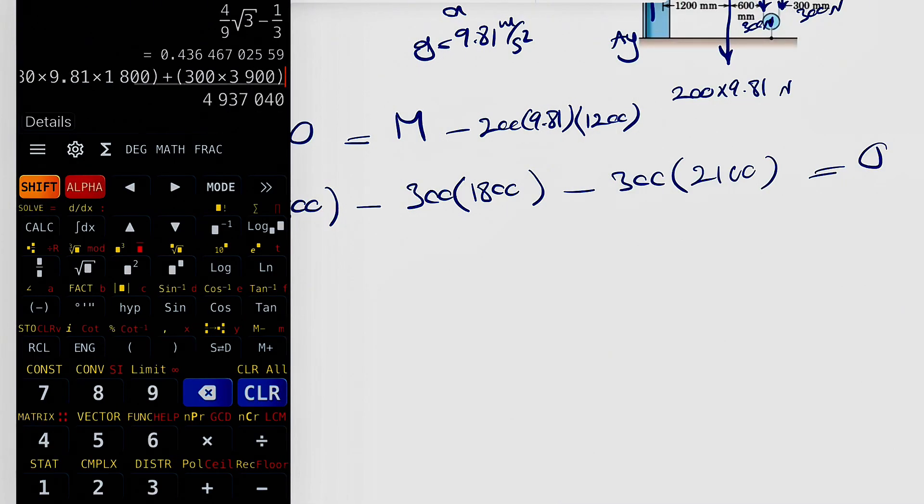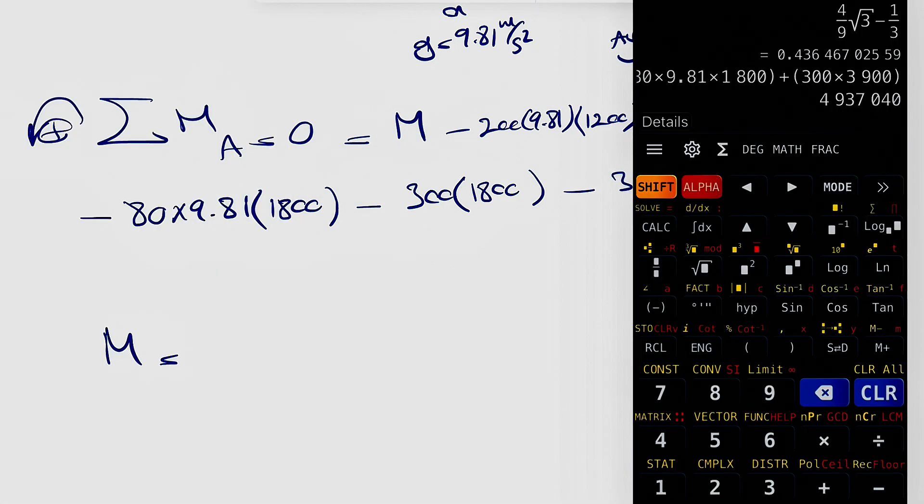And that's going to be our moment based on newton millimeters, because each of our position vectors are based on millimeters. So if we just divide that number by a thousand, we're going to get 4937 newton meter.